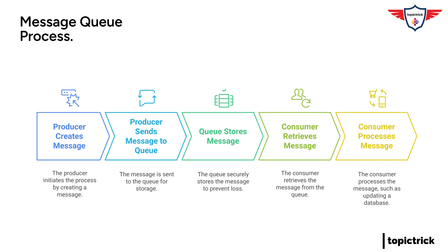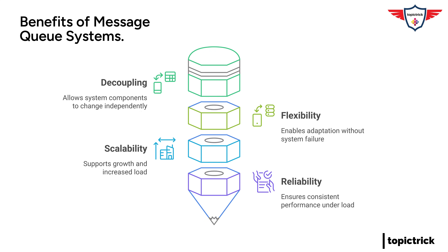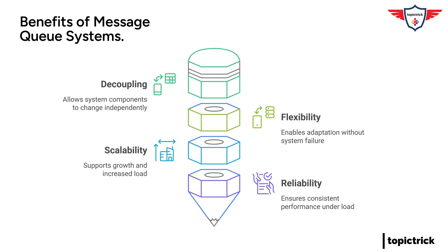Why is this whole message queue system so beneficial? For one, it allows for something called decoupling, which basically means different parts of the system can be modified or updated without affecting each other. Going back to our restaurant example, if the menu changes or a new chef joins the team, the kitchen can adapt without disrupting the entire flow of orders. The servers can keep picking up and delivering dishes as long as there's something on the counter, regardless of what's happening behind the scenes.